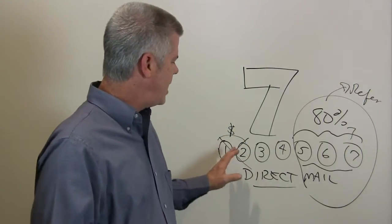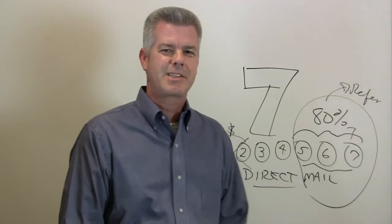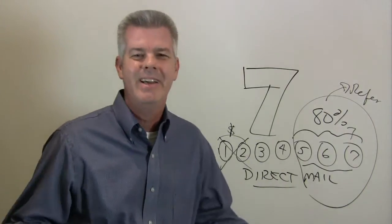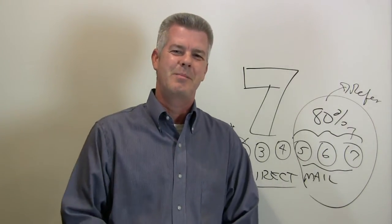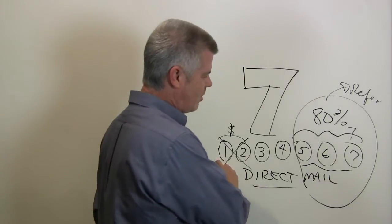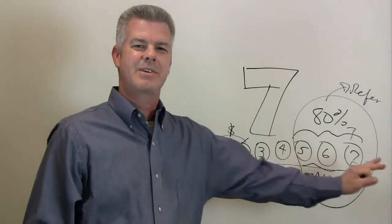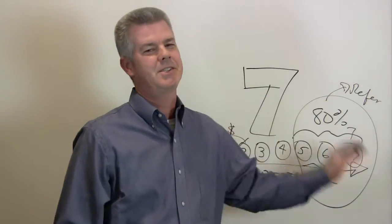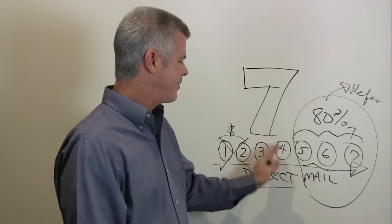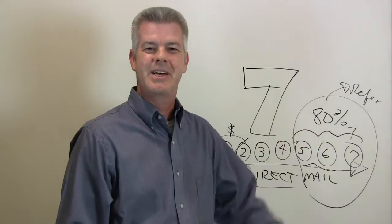So that's really what the rule of seven is all about. That doesn't mean do seven and stop, right? Seven is not necessarily a magical number here. Basically what we're talking about is consistency, consistency over time. The rule of seven just gets you through these first few mailings or first few touches, whatever it is.